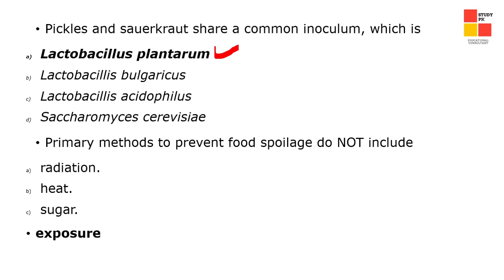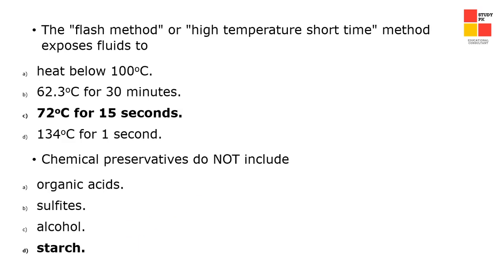The primary method to prevent food spoilage does not include exposure — that is the right option. The flash method, or high temperature short time (HTST) method, involves 72 degrees centigrade for 15 seconds — that is the right answer for HTST pasteurization.